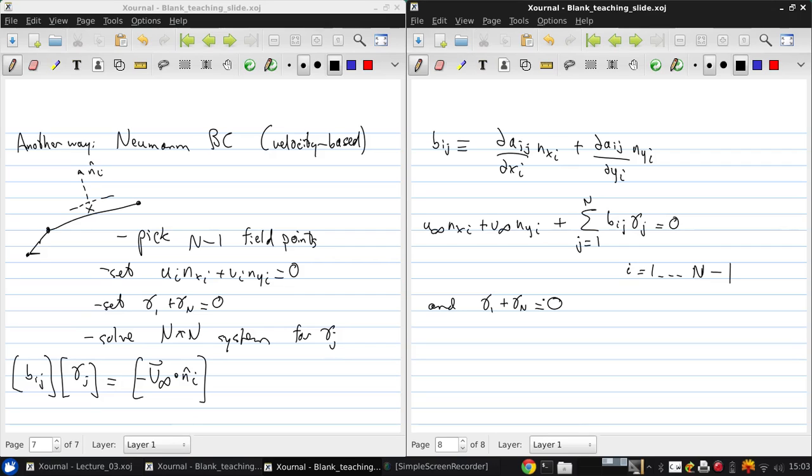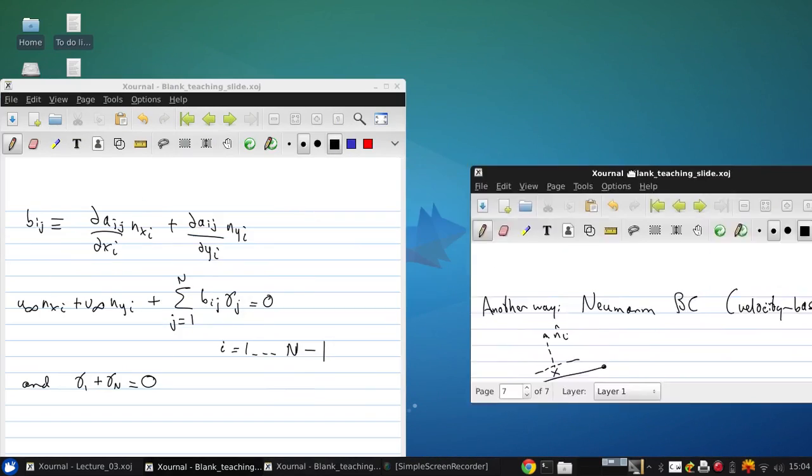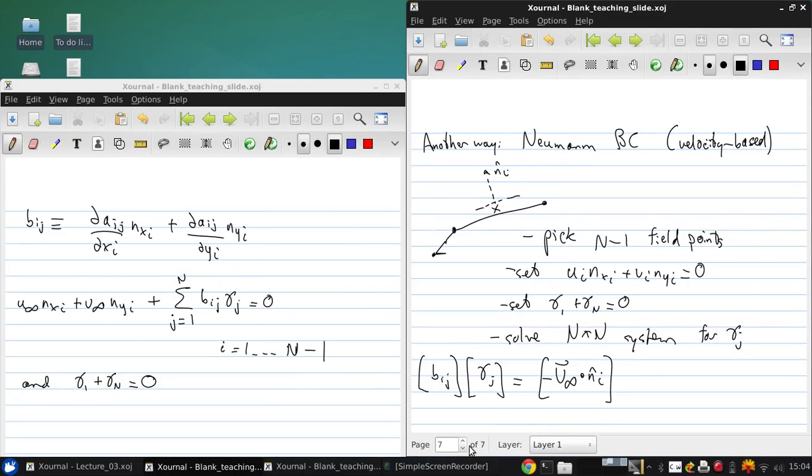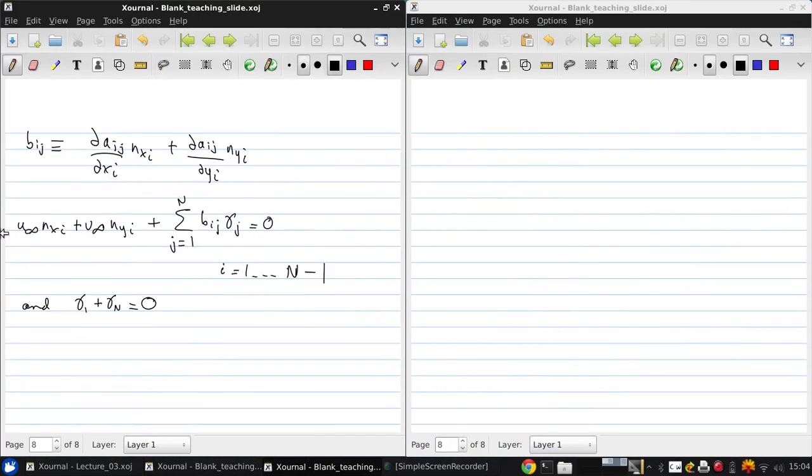Now, regardless of which of these types of boundary conditions we use, once the gamma_j are obtained, we can compute all the other quantities that we care about, such as the velocity components, the pressure, and the lift. So let's see how that's done once the gamma_j are known.